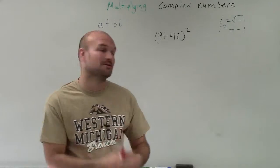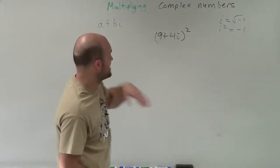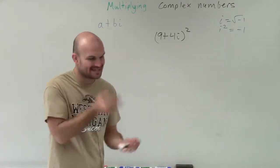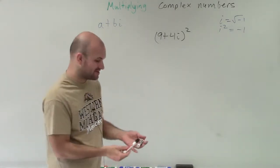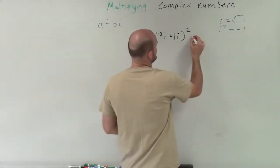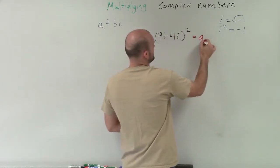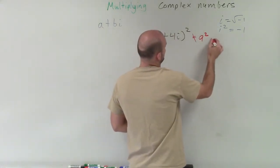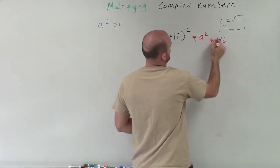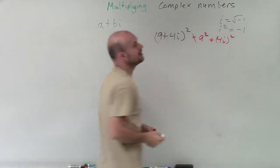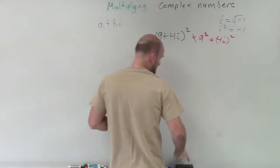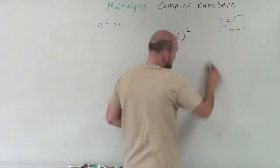So now I have a little problem where it says 9 plus 4i squared, and that brings me to an example of what exactly the square represents. Because a lot of students — big, big no-no — will say, oh, let's distribute this to 9 squared plus 4i squared. No, no, no, we cannot distribute the square sign. That is a big no-no, and that's the reason why I wanted to do this problem.